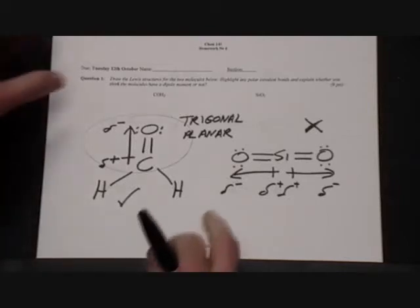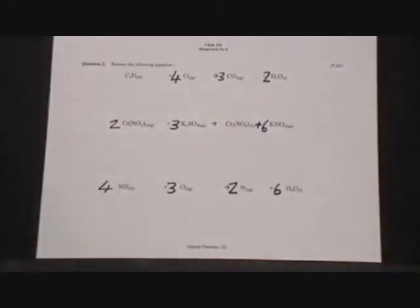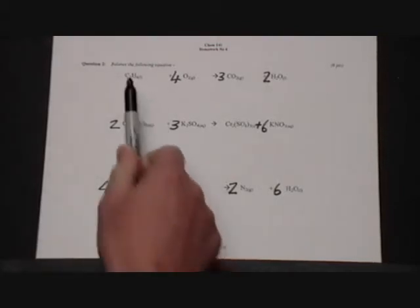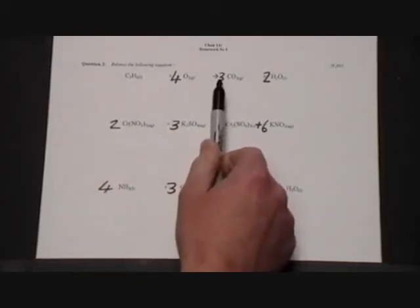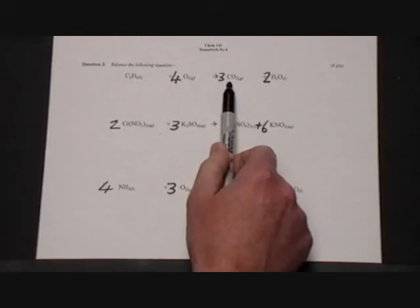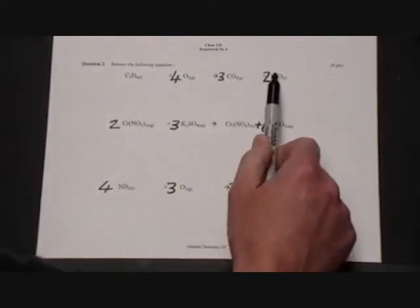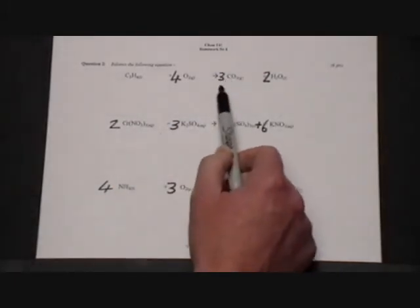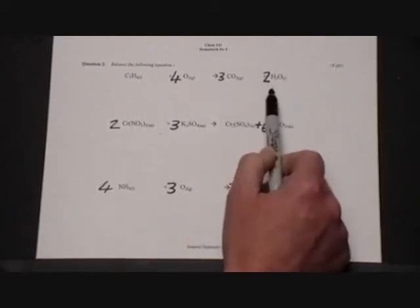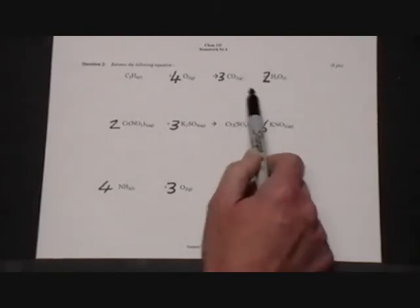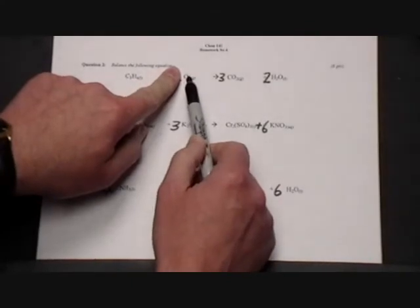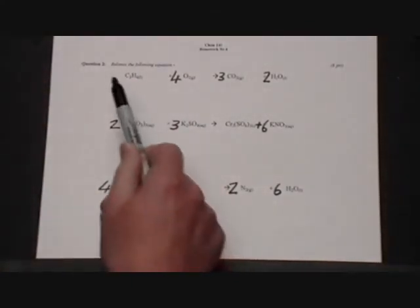Turning to the second page, we want to balance three equations. For the first one: there are three carbons on the left, so we need three molecules of carbon dioxide on the right. For hydrogen, there are four hydrogens on the left, so we use two molecules of water to give us four hydrogens. Balancing oxygen: three CO₂ gives six oxygens, two H₂O gives two, totaling eight. So we need four molecules of O₂ on the left to give us eight oxygens.